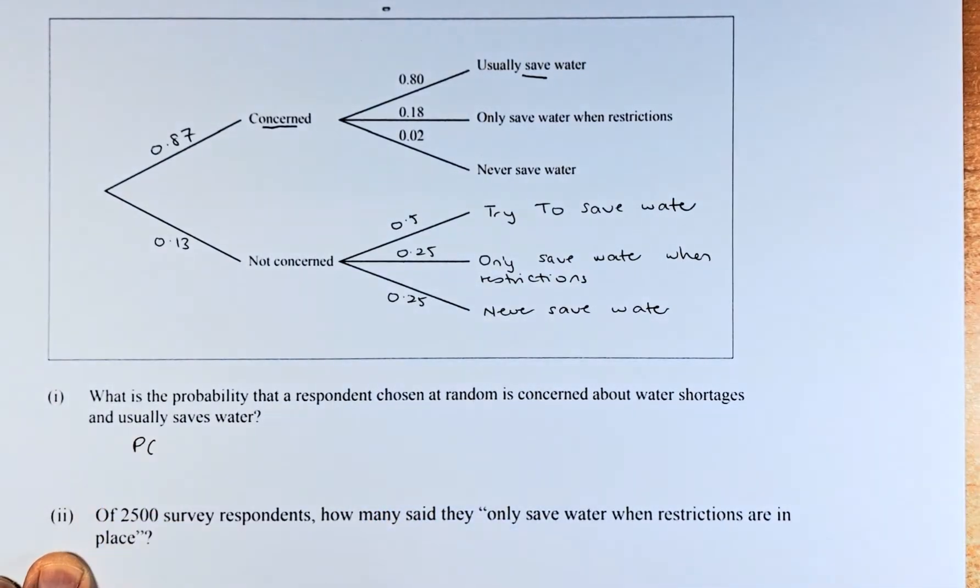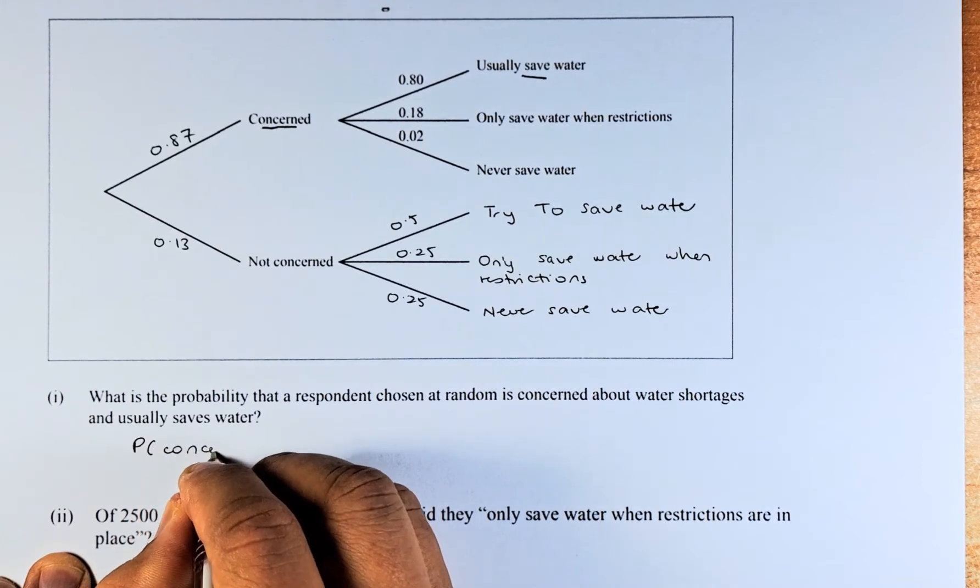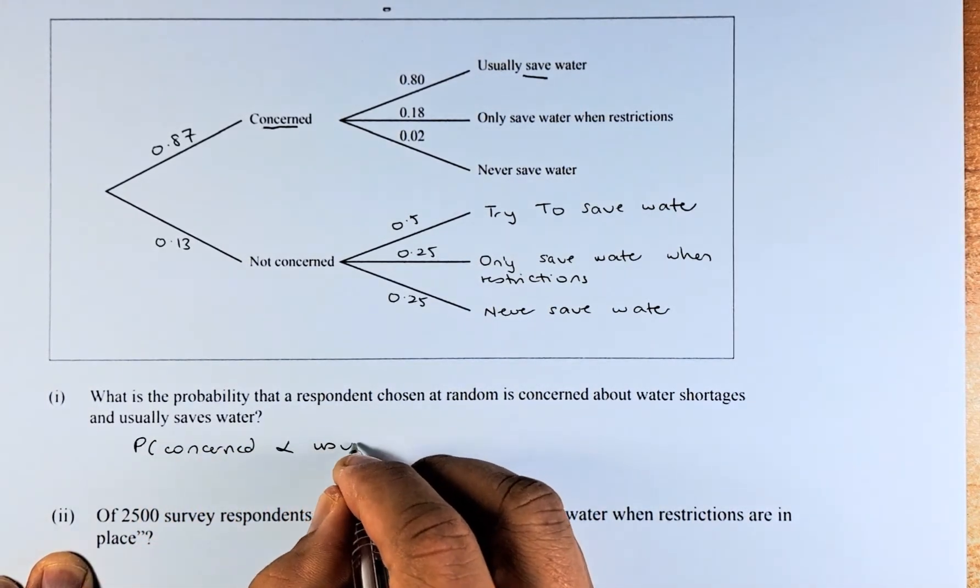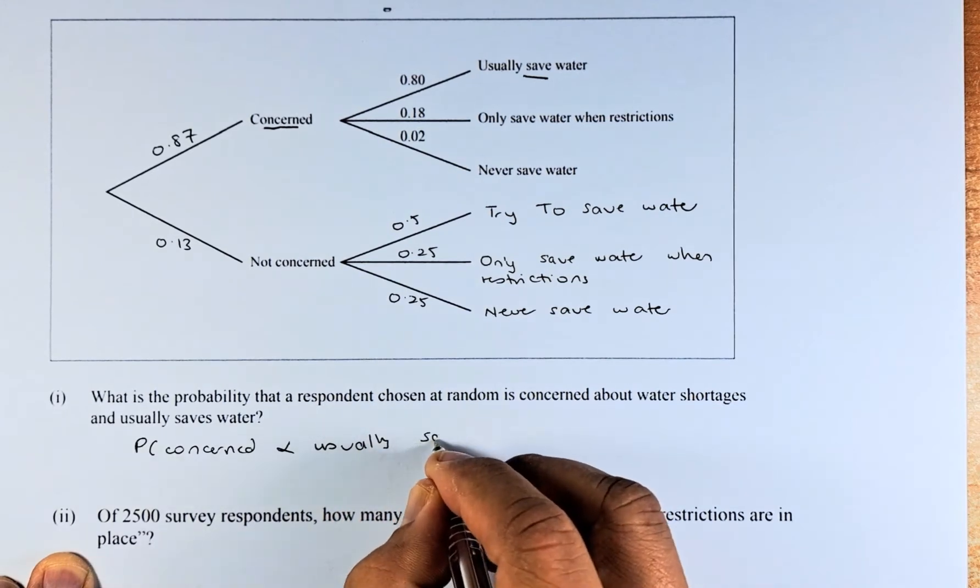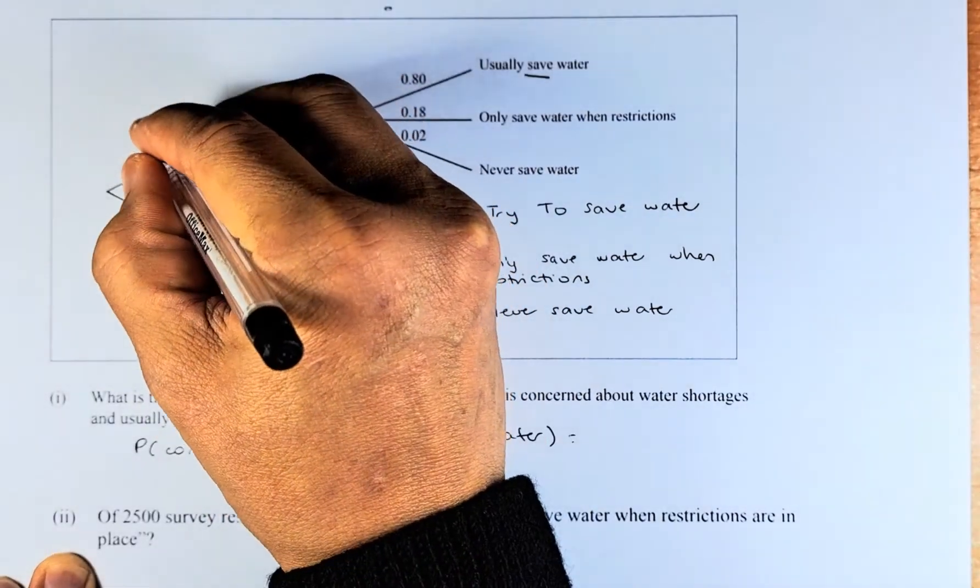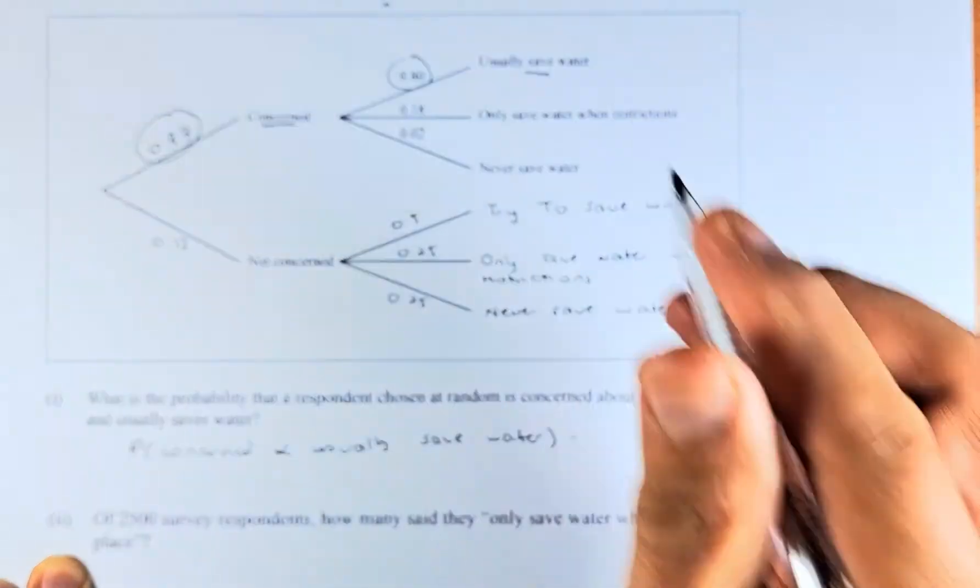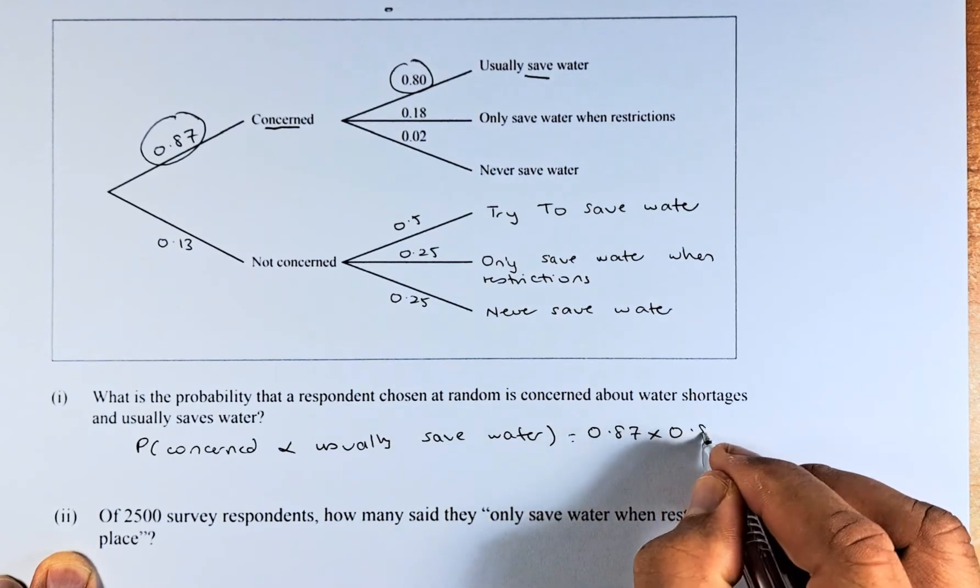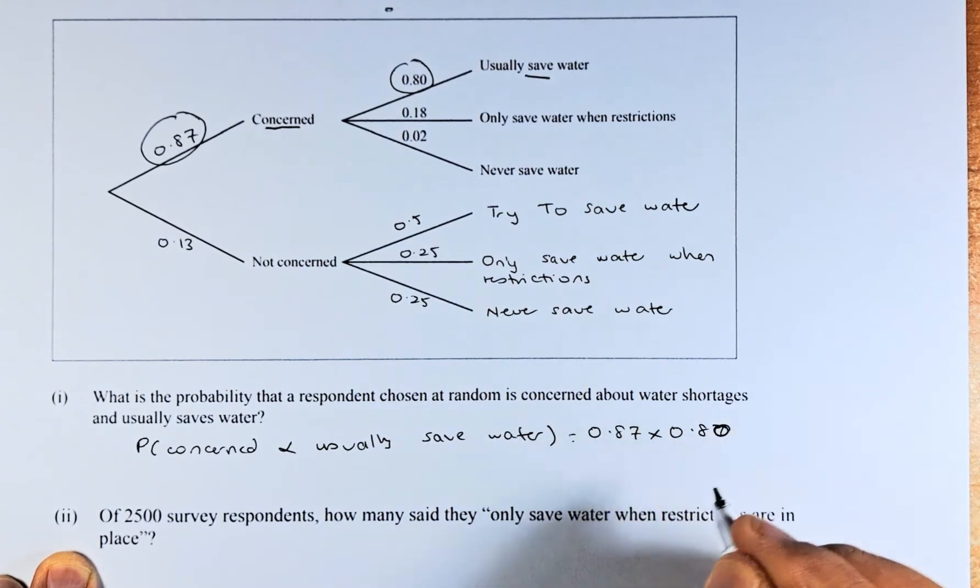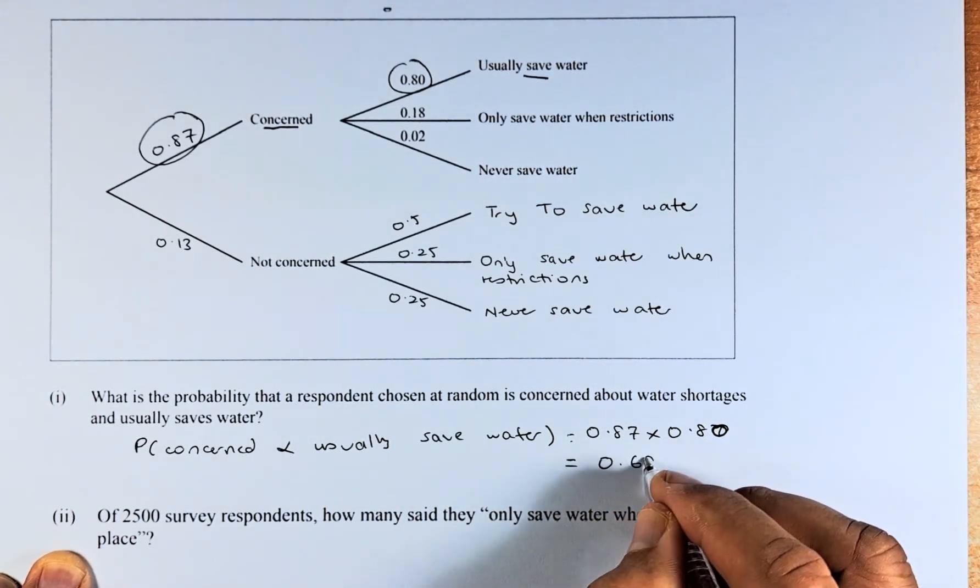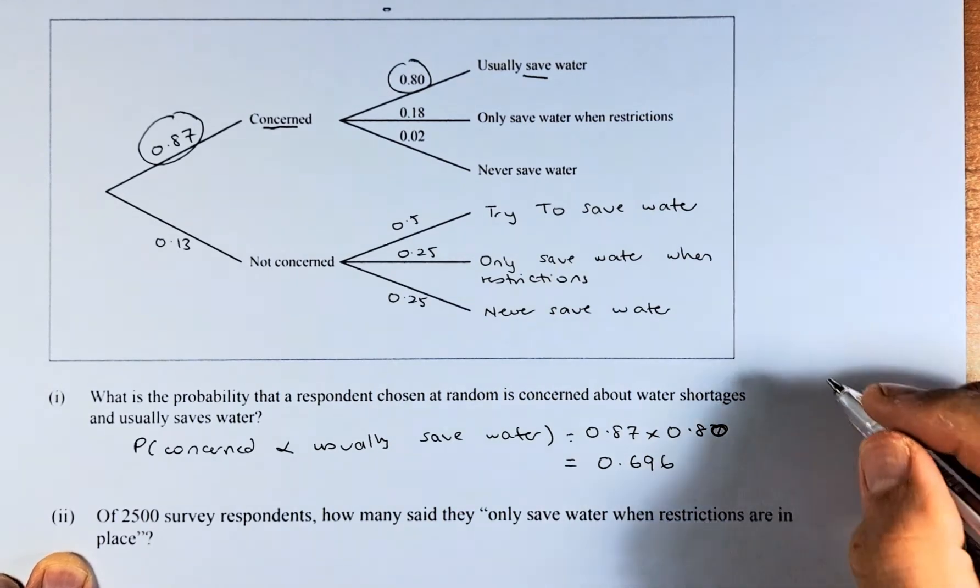So, probability that concern and at the same time, usually save water. What we need to do, we just take this number here, 0.87 multiplied by 0.8. Put in your calculator and the answer is going to be 0.696 and that is easily achieved.